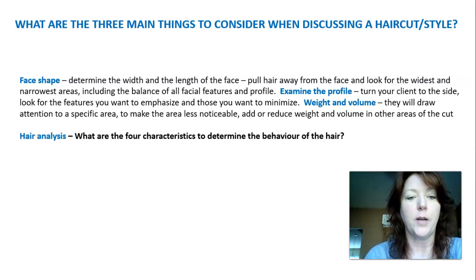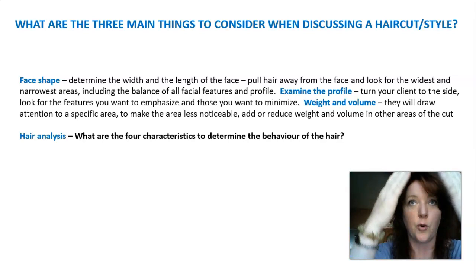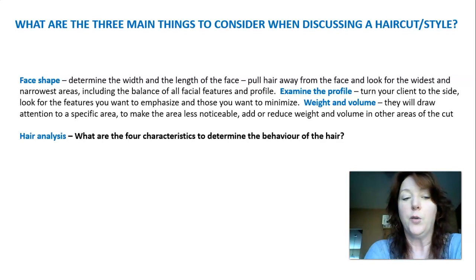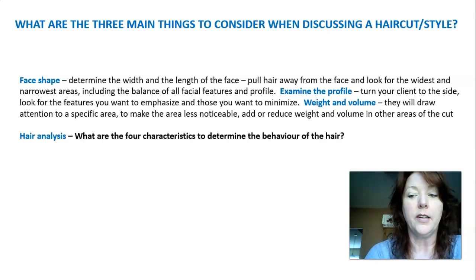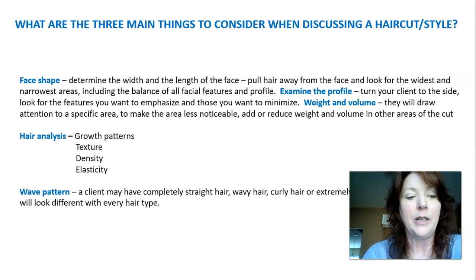The three main things to consider when discussing a haircut or style: first, face shape — determine the width and length of their face, pull the hair away from the face and look for the widest and narrowest areas. Second, the balance of their facial features and their profile — examine the profile from the side, looking for features you want to emphasize and those you want to minimize. Third, weight and volume to draw attention to a specific area or reduce it in other areas.